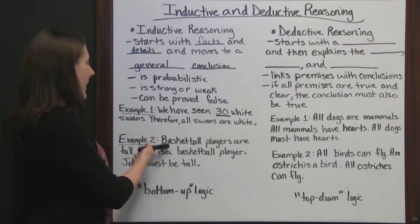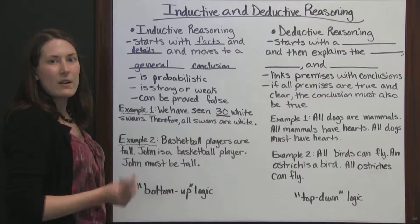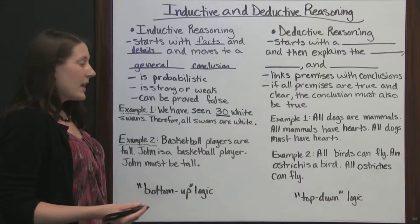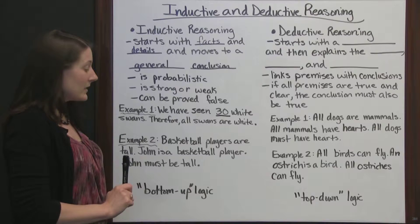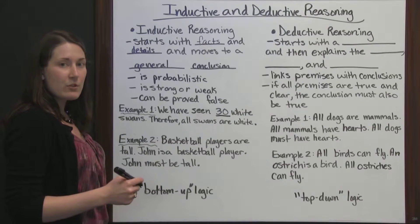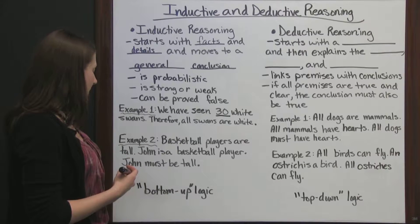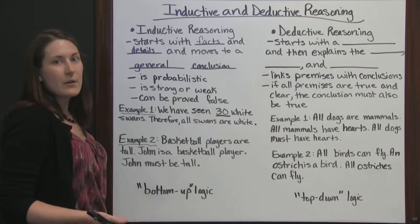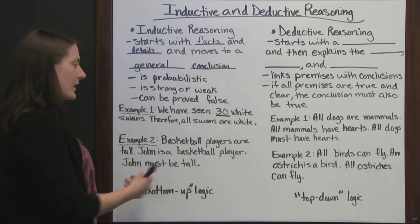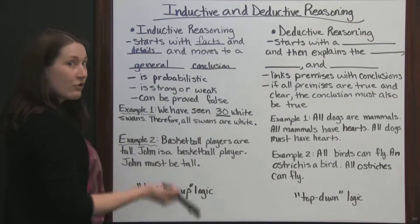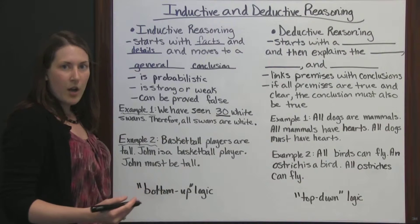Let's look at the next one. Basketball players are tall. John is a basketball player. John must be tall. We don't actually know John, so we're not sure about this one. It's very probable — this would be a stronger conclusion than our one about the white swans, but we don't know John. John could be short; John could just be really good at making goals. That doesn't mean he is going to be a tall person. It's probable and a stronger conclusion, but we don't know for sure. We just use inductive reasoning, knowing that basketball players are generally tall and that John is a basketball player, to figure out that John is probably tall.